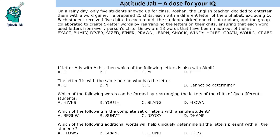Hello everyone, welcome to Aptitude Jab. This set says that on a rainy day, there were only 5 students in a class and their English teacher decided to give them a word game. In this, he prepared 25 chits with a different letter, excluding the letter Q.